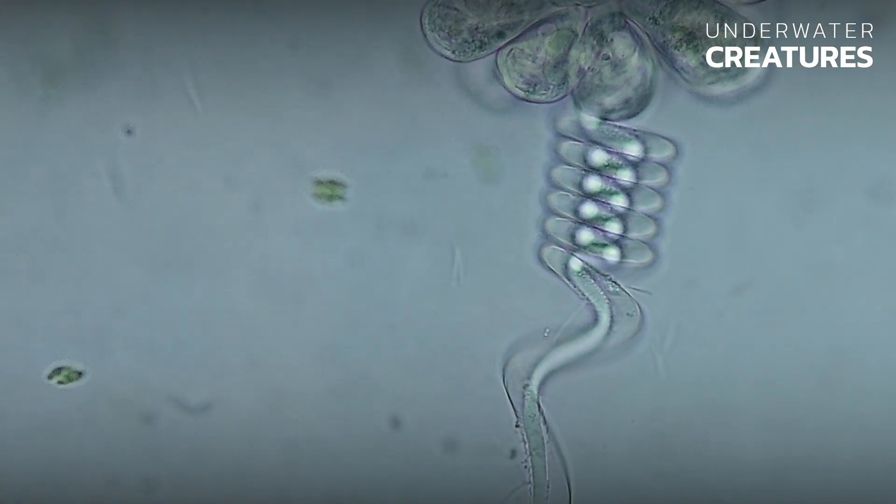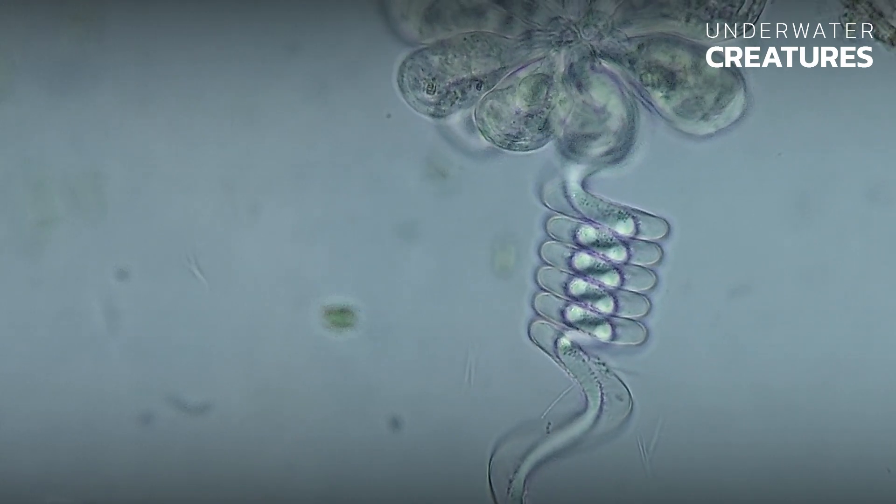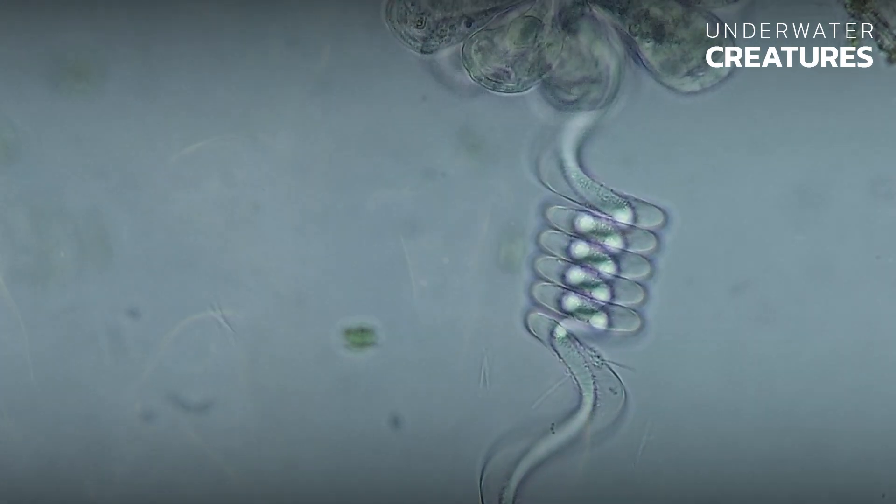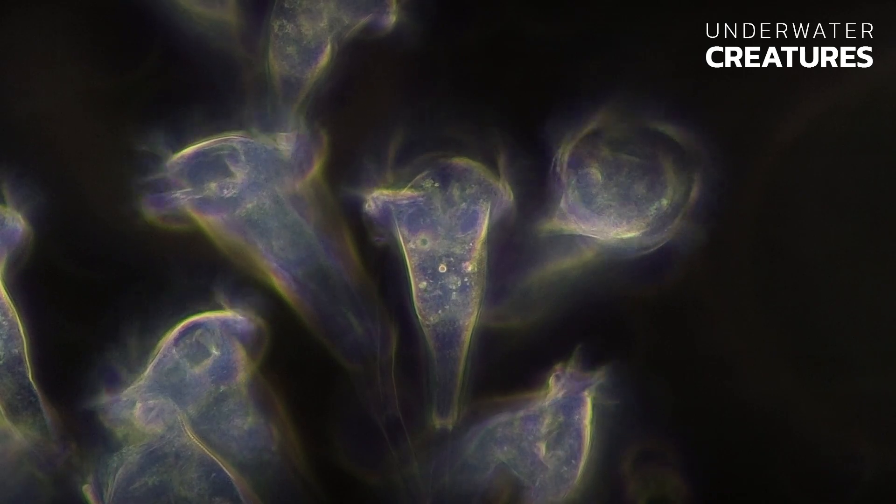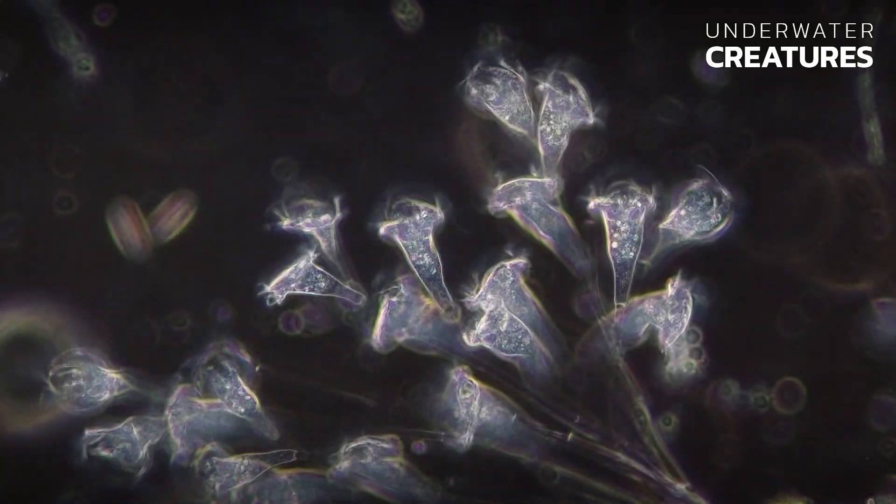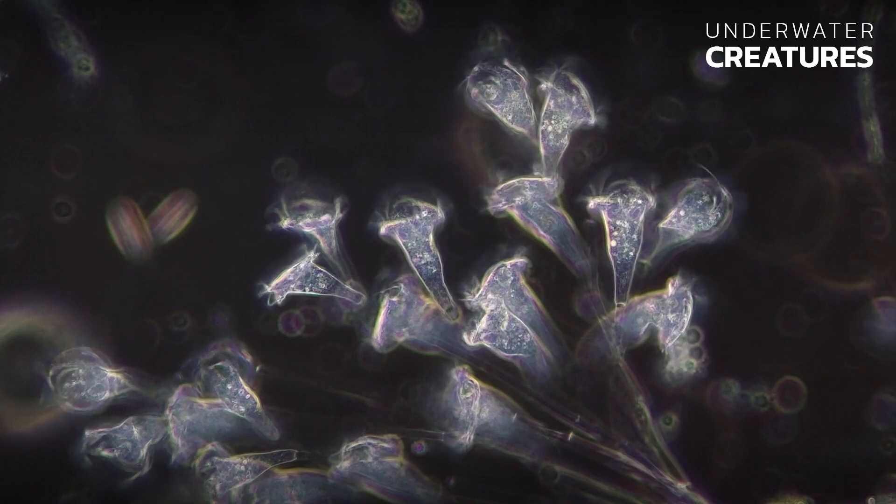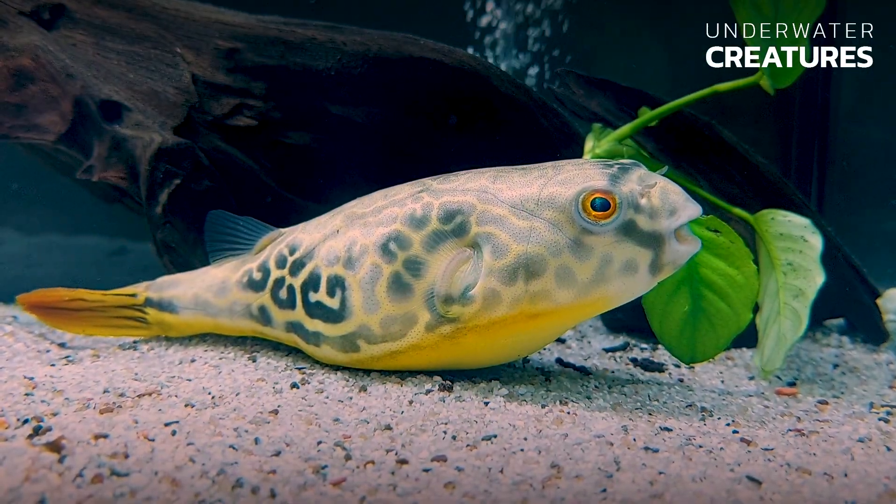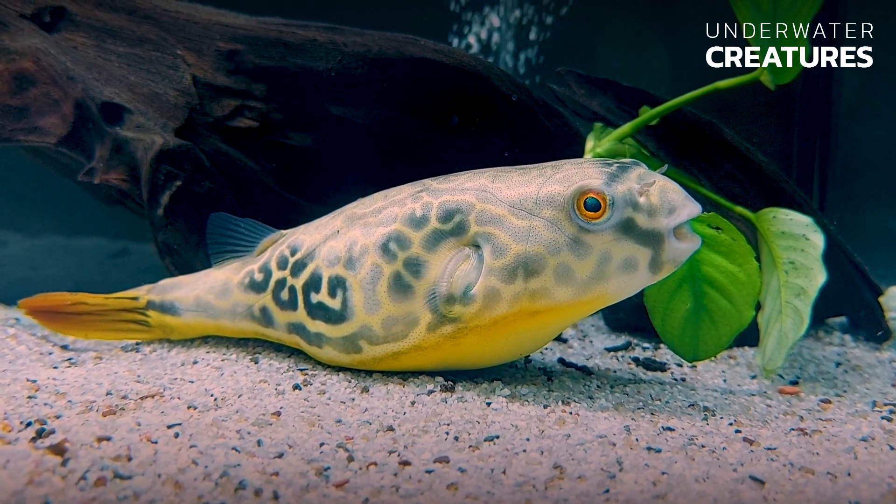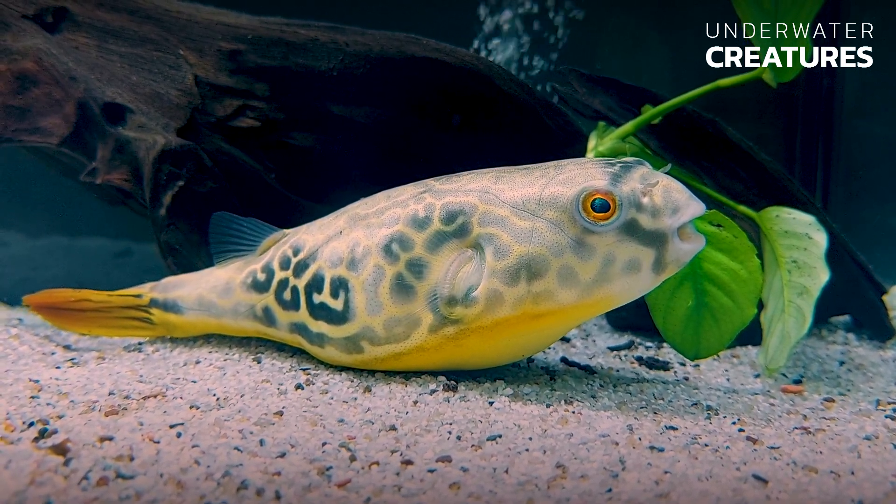The shape of the infusoria resembles a drinking cup, which the ancient Greeks called Carchesium, where the name of the whole genus of protozoa comes from. They are completely harmless to fish. Carchesium are single-celled microorganisms that actually fulfill a useful function in the aquarium.